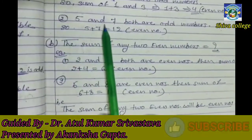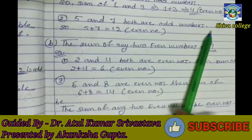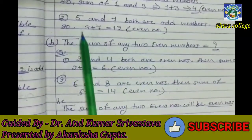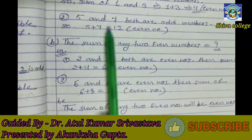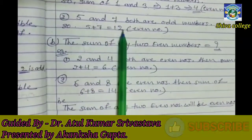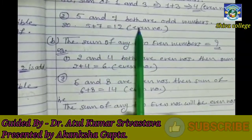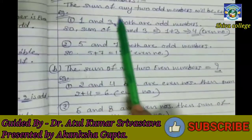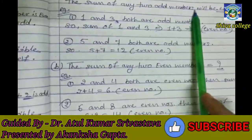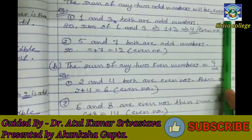Second example: 5 and 7, both are odd numbers. Sum of 5 and 7 will be 12. 12 is an even number. So our statement — the sum of any two odd numbers will be even numbers — is confirmed.